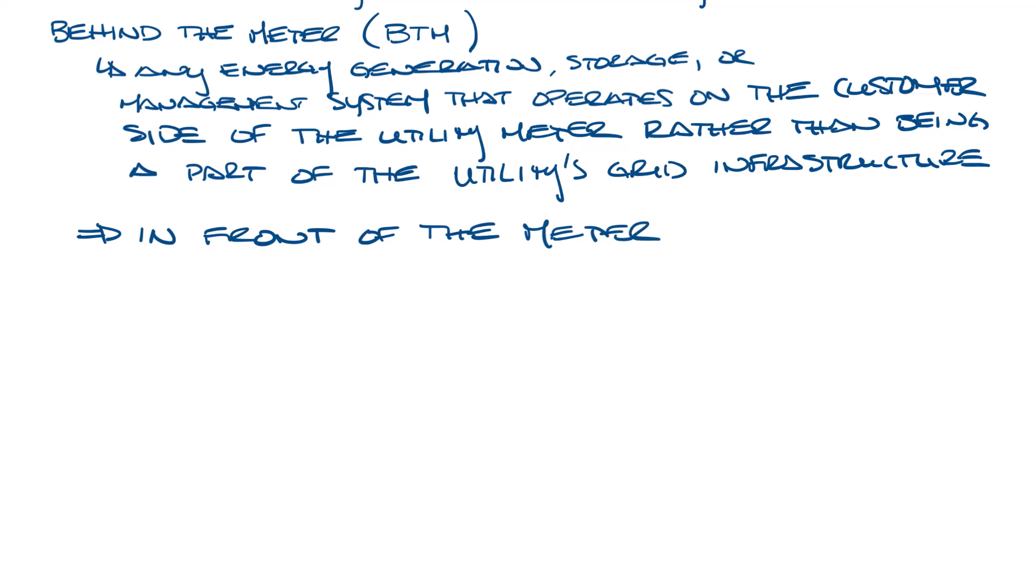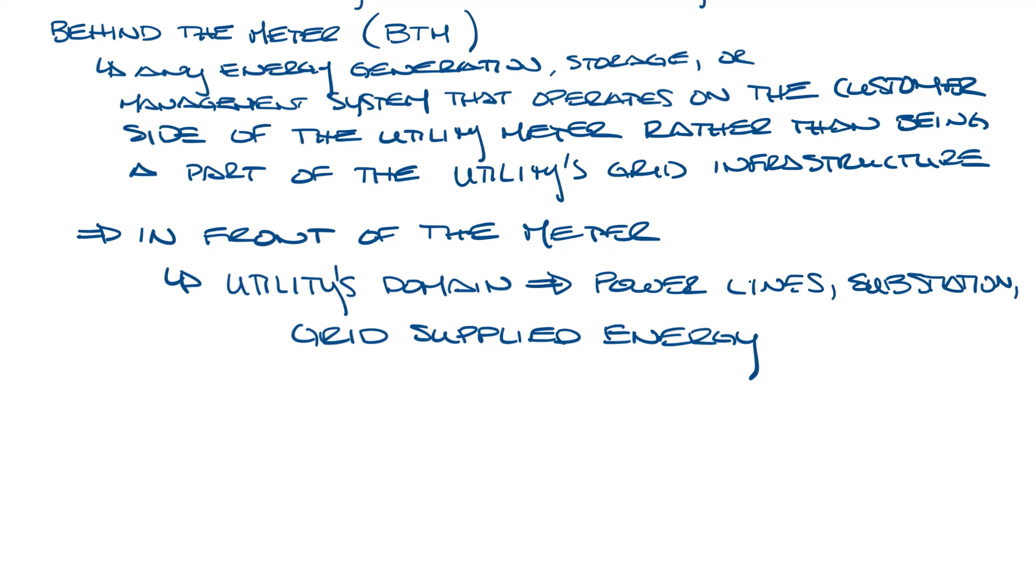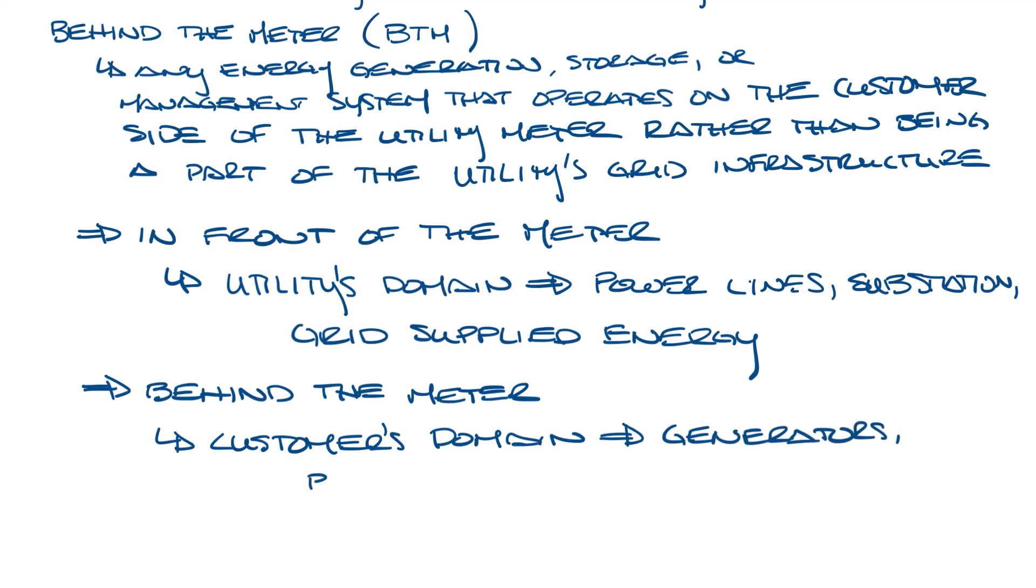So you'll have in front of the meter, this is the utilities domain. It includes power lines, substations, and grid supplied energy. And then you'll have behind the meter, which is the customer's domain. This includes generators, batteries, solar, power, etc.